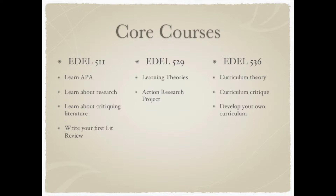There are 3 core courses in the master's program that you will take. These are 511, 529, and 536. 511 is all about educational research. It is a foundational course specifically designed to help you understand what is research and really what is educational research. You will look at and explore different research paradigms such as qualitative research, quantitative research, and mixed methods research. You will do activities such as critiquing literature and writing a literature review. A literature review is extremely important — it is a skill that you will use throughout the program. This course is all about understanding educational research.